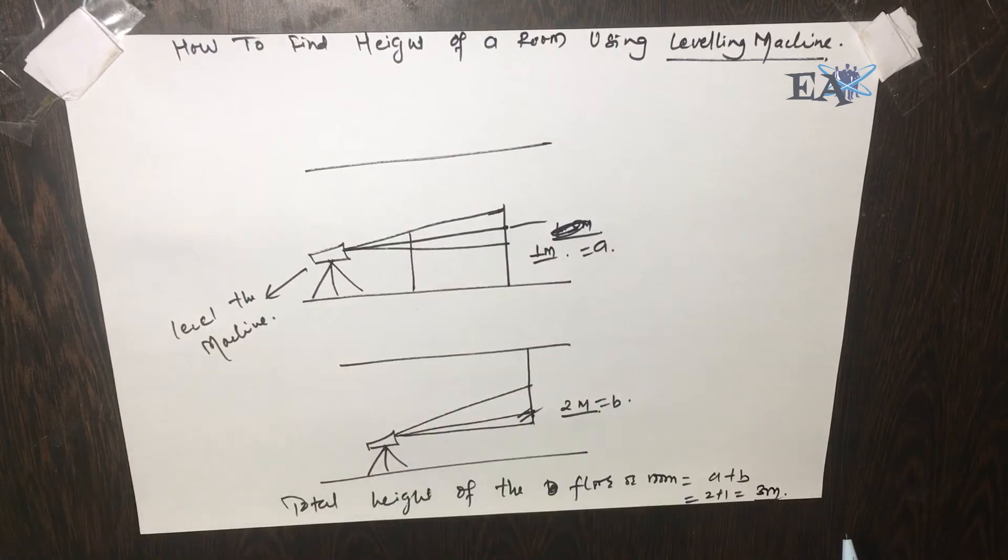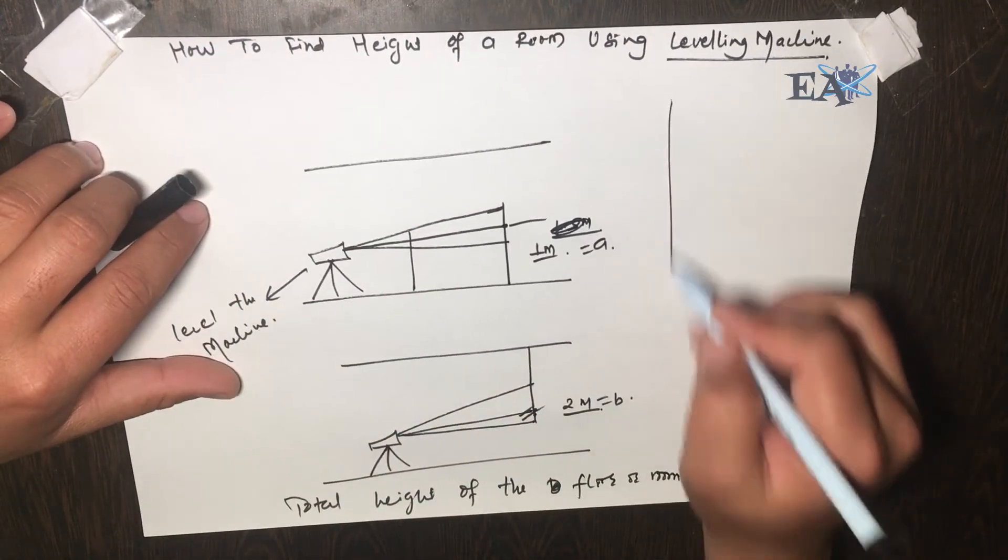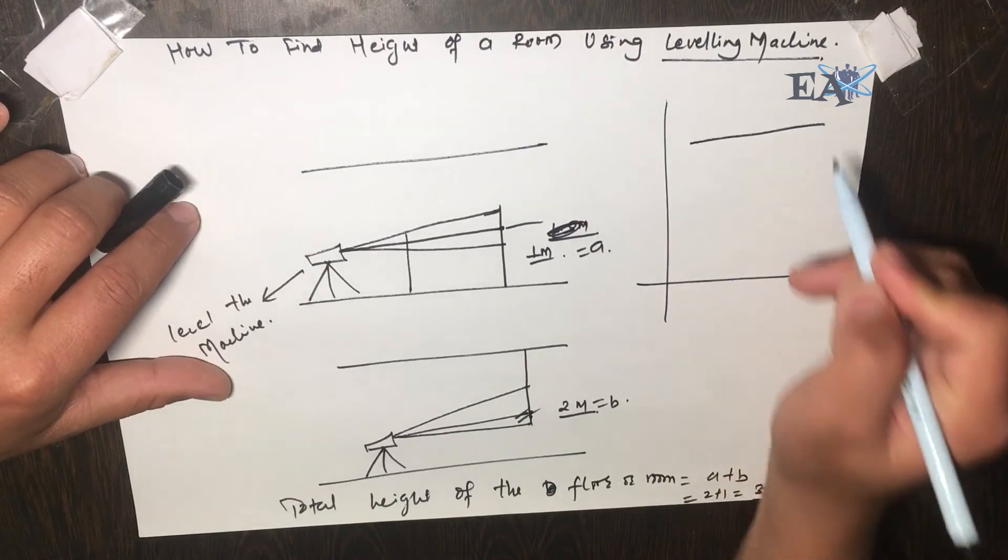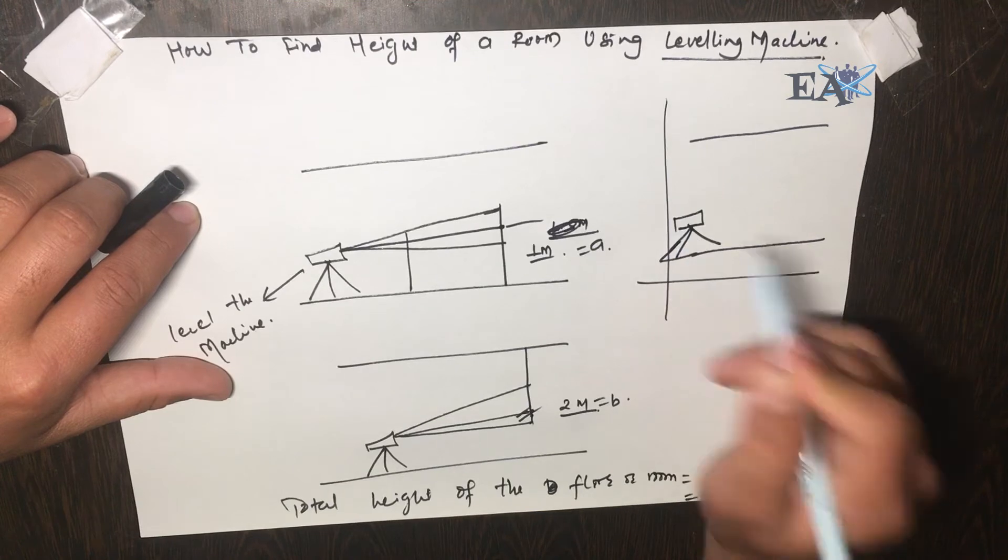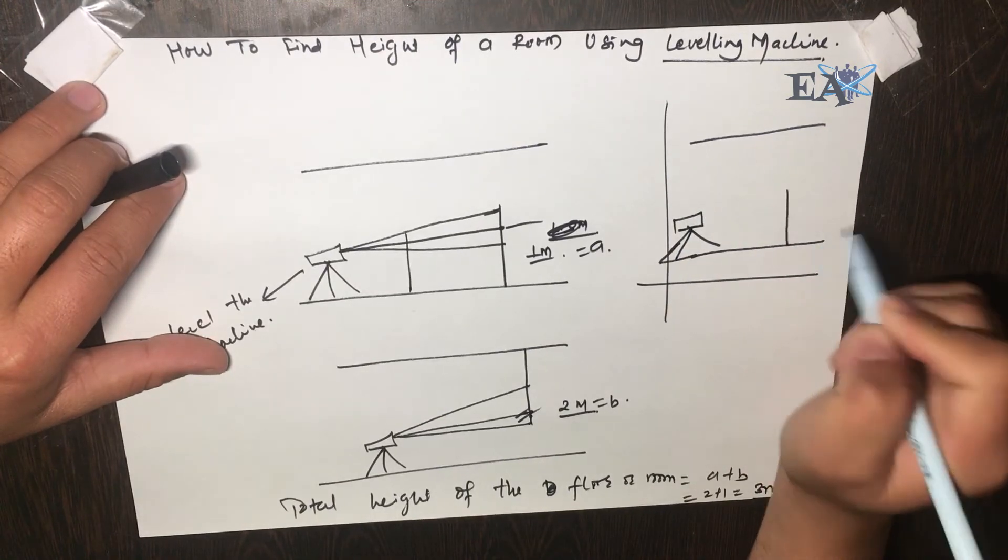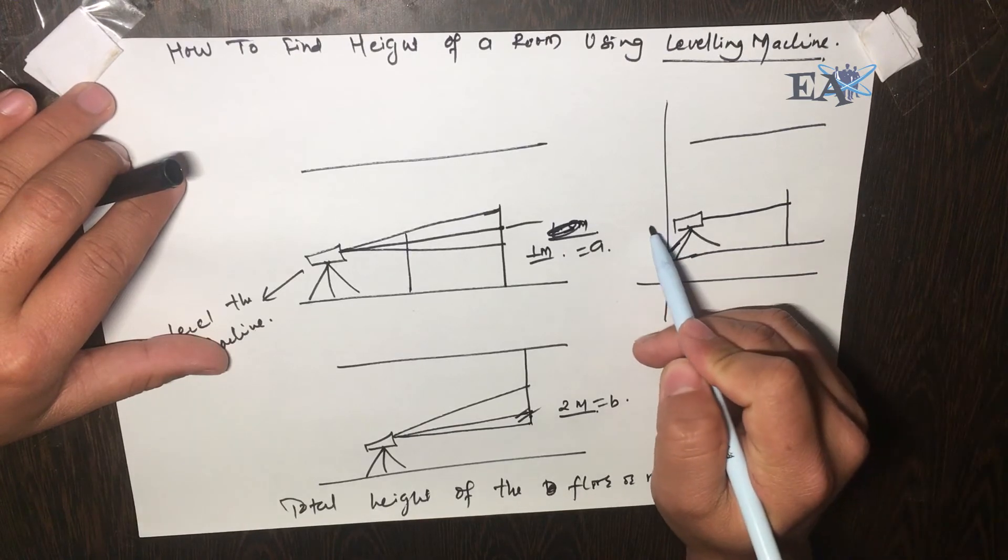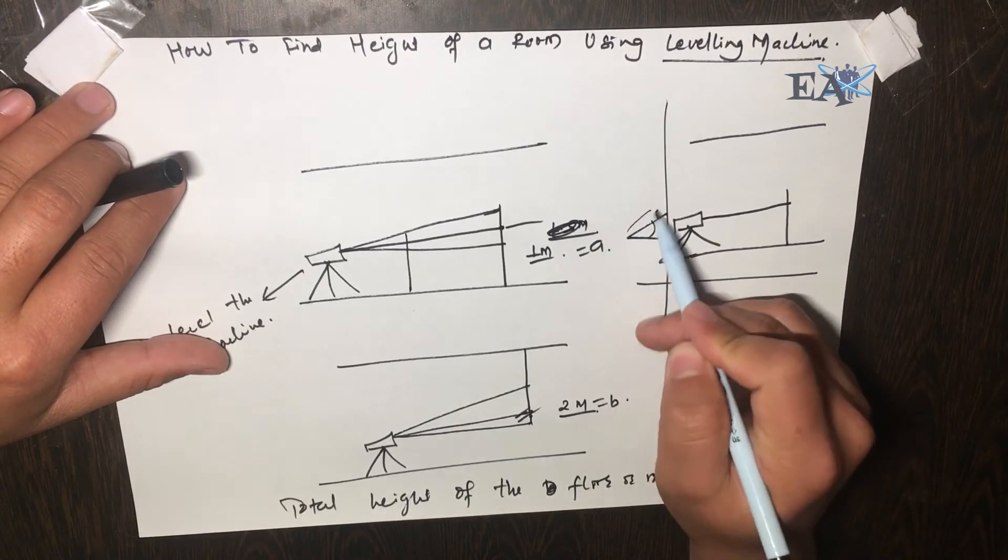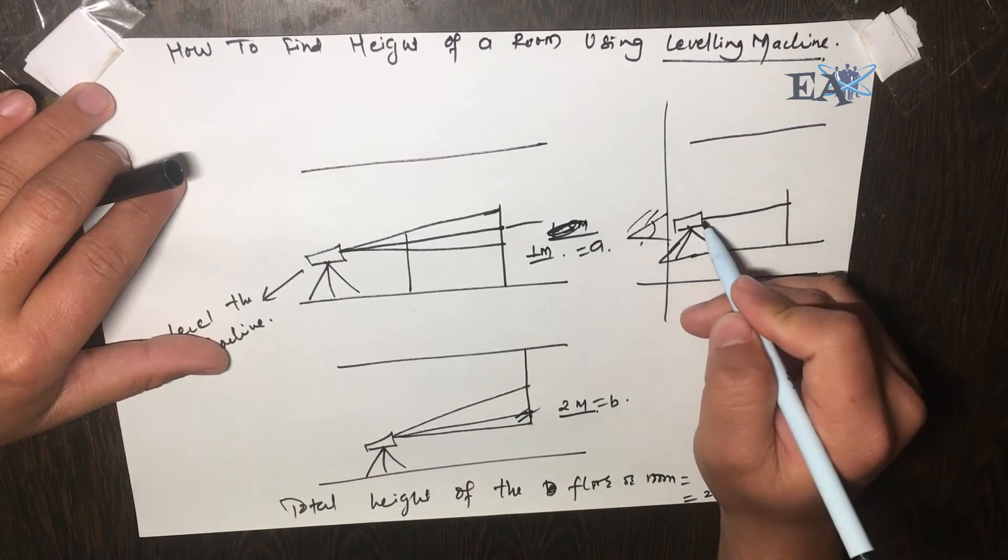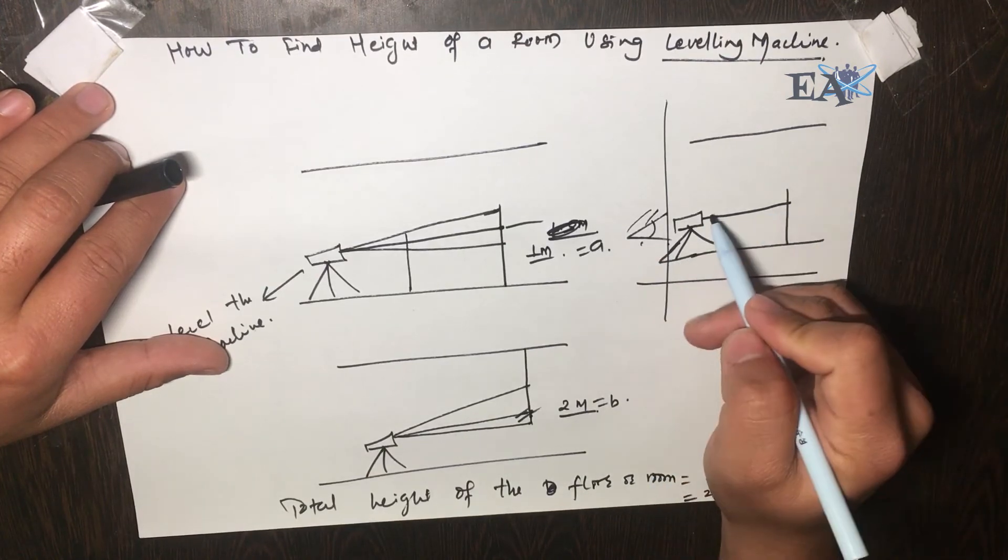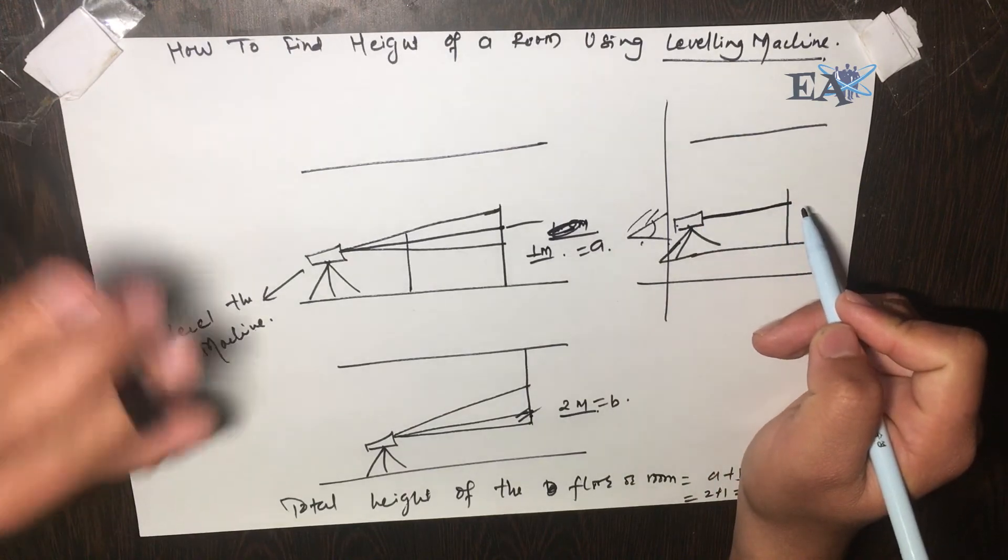This is how it works. We have a room with our machine positioned here, and we place the staff in this position and take a reading. The ray from the machine always goes in a straight, perfectly horizontal direction.